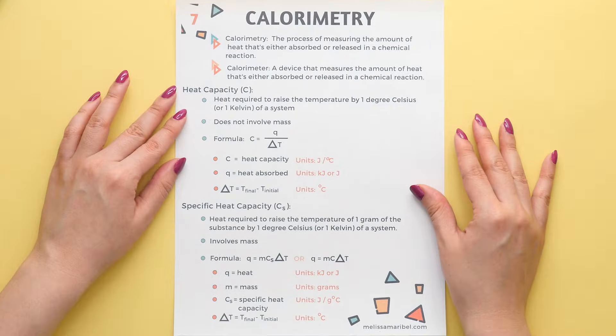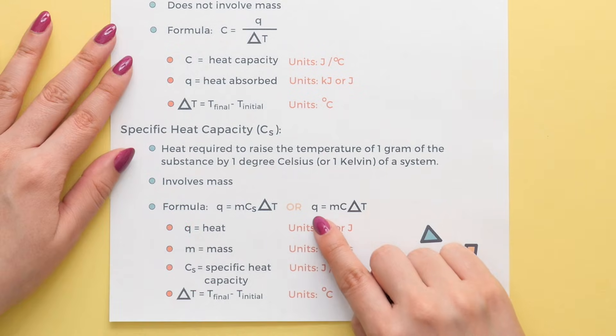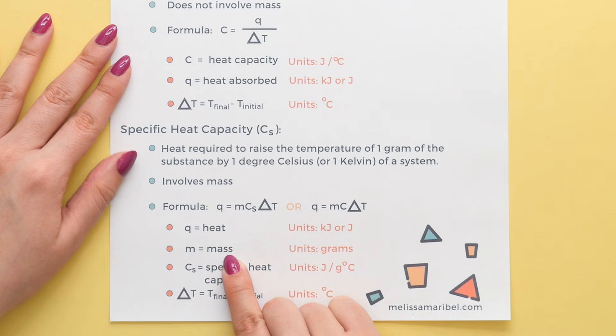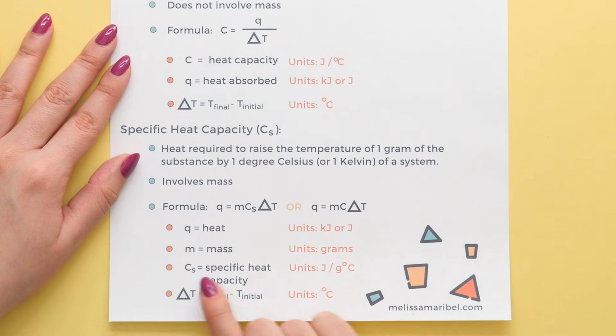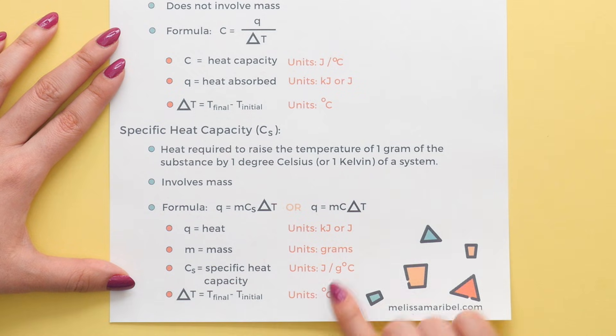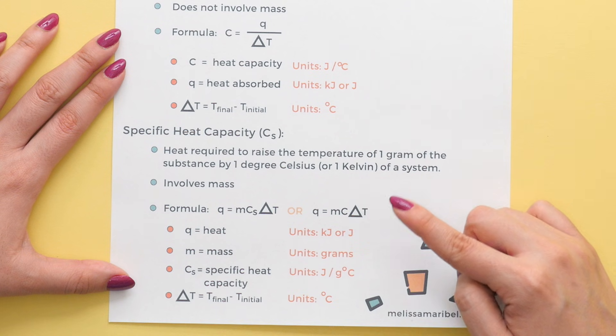The main formula you will see in calorimetry is Q equals mcΔT, where Q is heat measured in either kilojoules or joules, m is the mass measured in grams, C or Cs is the specific heat capacity with units of joules per gram Celsius, and delta T is the change of temperature, which is final temperature minus initial temperature measured in Celsius. It is important to check that all of your given values are in the specific units before plugging your values into the formula.